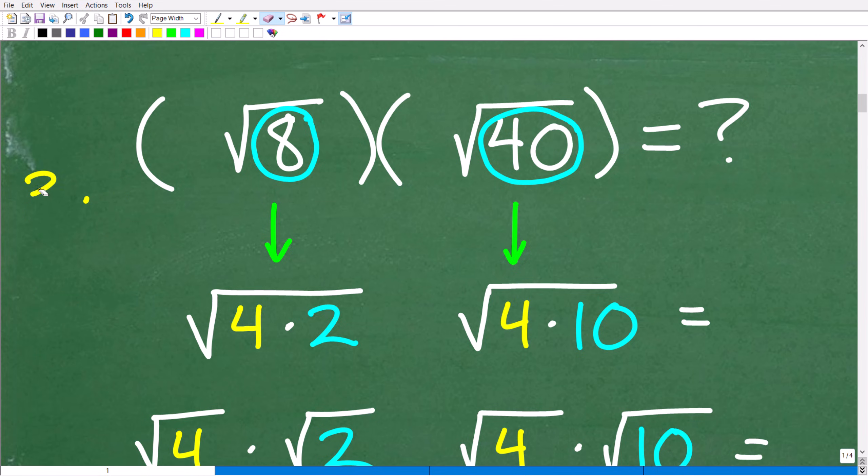So when we're looking at factors of these respective numbers, we're asking ourselves, hey, do these numbers have any perfect square factors? Because if they do, we want to rewrite these values as products of a perfect square factor and whatever else. So let's take a look at 8 here. So 8, I can write as 4 times 2. I'm like, oh, wow, that's great because 4 is a perfect square factor. And 40, I can write as 4 times 10. Again, 4 is a perfect square factor.